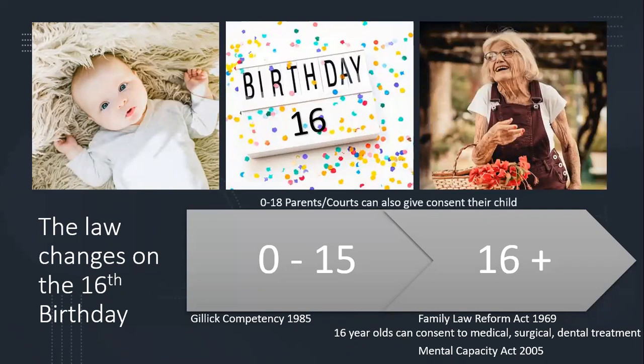An important thing to remember is that when it comes to children between the ages of zero and their 18th birthday, parents or people with parental responsibility — which might be the local authority, for example — and the courts can also give consent for the child to undergo treatment. This applies regardless of whether the child is under 16 and Gillick competent or not, and regardless of whether the child is over 16 but under 18 and has capacity or not. Parents, those with parental responsibility, and courts can give consent up until the child's 18th birthday if deemed in their best interest.